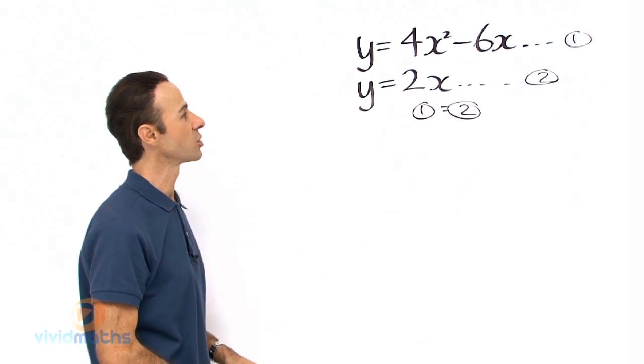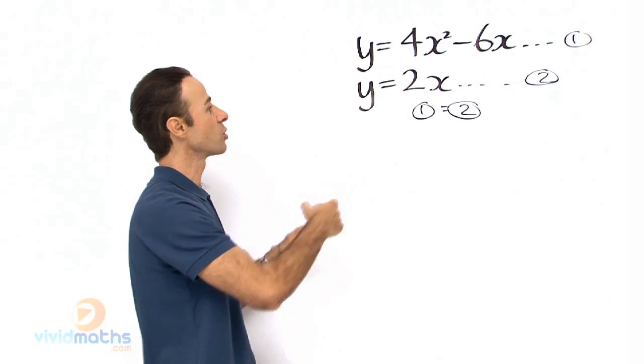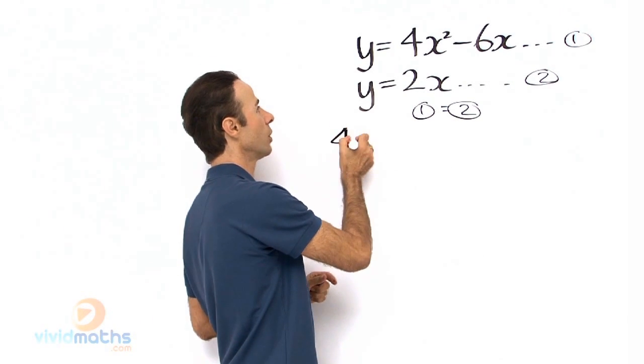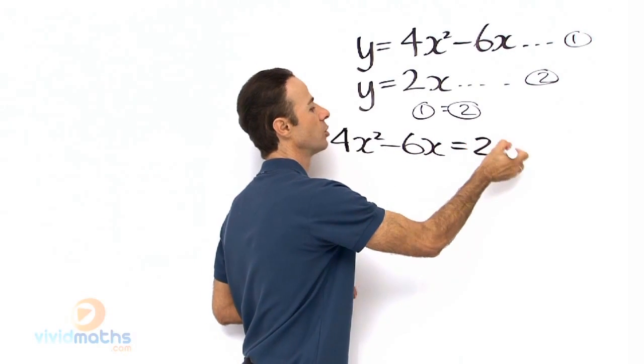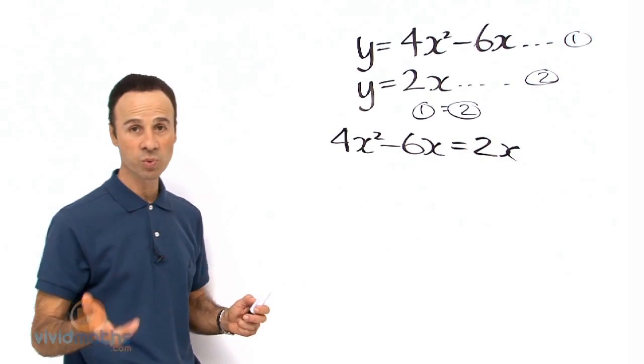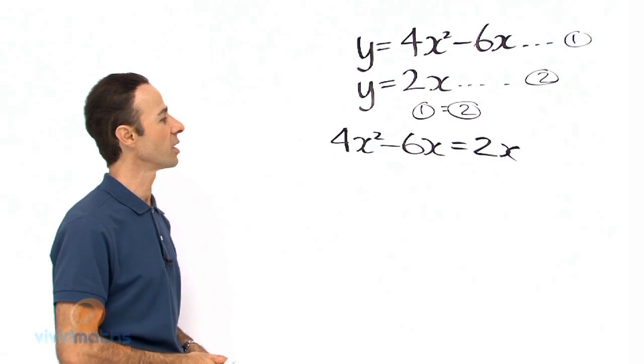Let us do that, that is called substituting 1 into 2, so that means left hand side equals right hand side. We will go 4x squared minus 6x equals 2x, in other words y equals y. So there is right hand side and there is your left hand side.